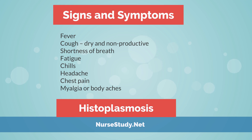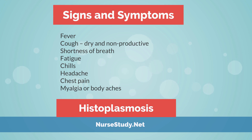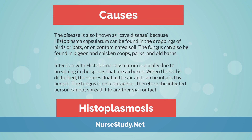Severe or disseminated histoplasmosis can manifest through the following pneumonia-like symptoms: fever, cough (dry and non-productive), shortness of breath, fatigue, chills, headache, chest pain, and myalgia or body aches.